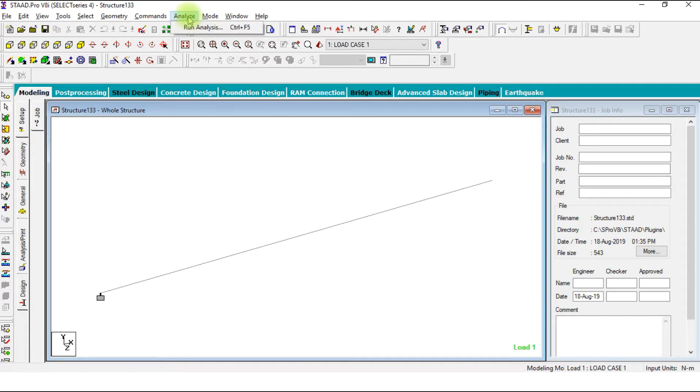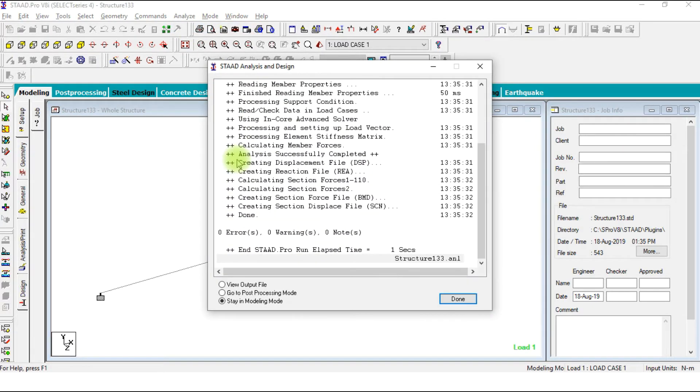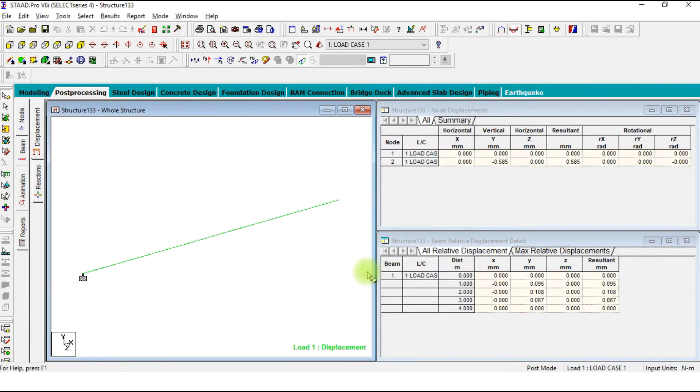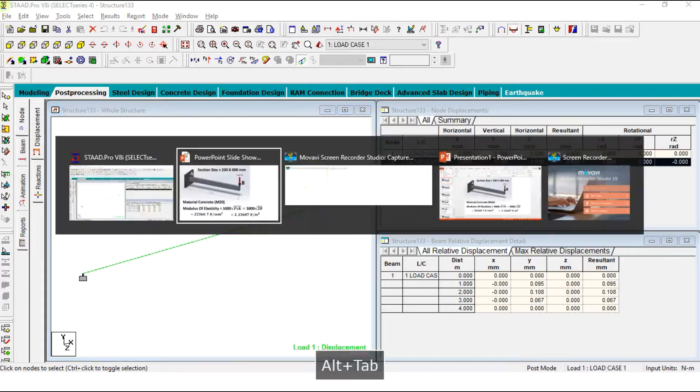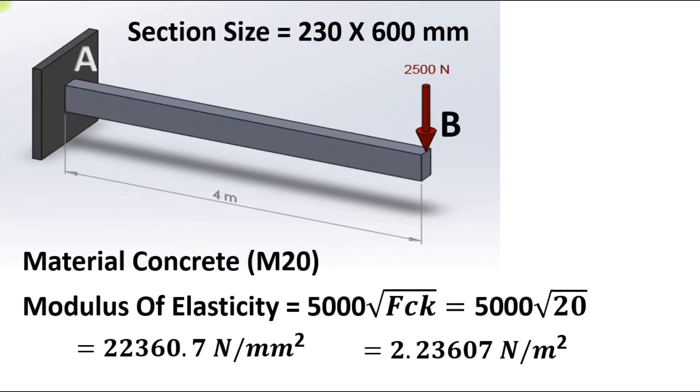Now analyze one more time. Go to post processing mode, apply okay. Now check the difference, displacement at free end, it will be 0.585. Let's check it out, the deflection 0.585.